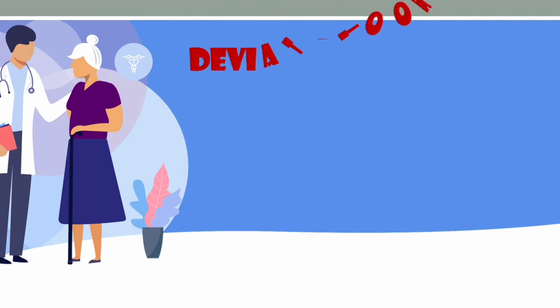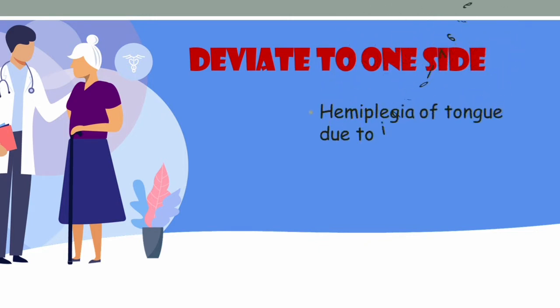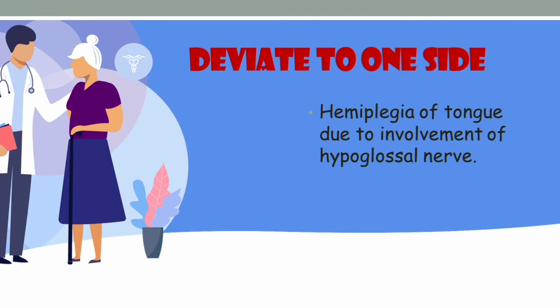If the patient has protruded the tongue easily, we next look for deviation to one side. Deviation indicates involvement of the hypoglossal nerve due to some disease condition, since the hypoglossal nerve is the main nerve supply to the tongue. Whenever there is hypoglossal nerve involvement, it leads to deviation of the tongue. If there is no deviation, there is no worry — move on to the next step.